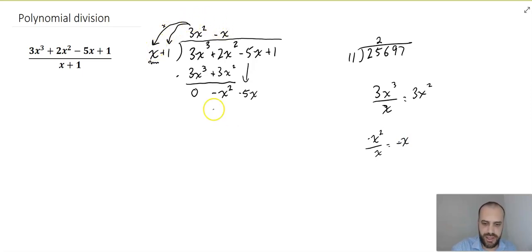Negative x times x is going to be negative x squared. Negative x times positive 1 is going to be negative x. Okay, and we subtract one from the other. You need to be careful with these subtractions, because there's going to be negatives and positives everywhere. Negative x squared minus minus x squared is the same as negative x squared plus x squared. Now, again, if you've done this correctly, this first thing should always be a 0. They should always cancel each other out. Negative 5x minus minus x is the same as negative 5x plus x, which is negative 4x. And then drag the next one down, plus 1.